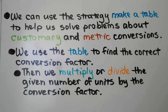We can use the strategy Make a Table to help us solve problems about customary and metric conversions. We use the table to find the correct conversion factor, then we multiply or divide the given number of units by the conversion factor.